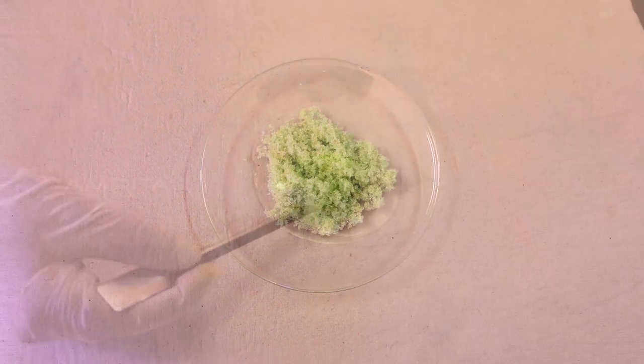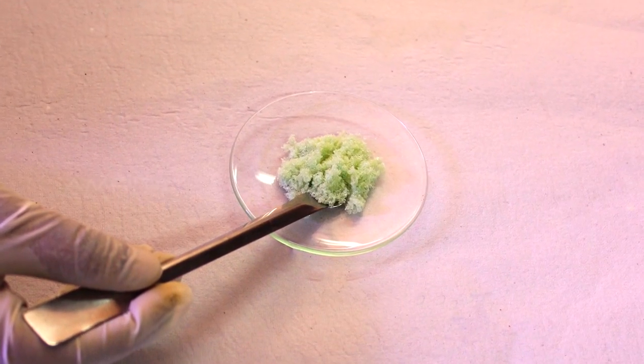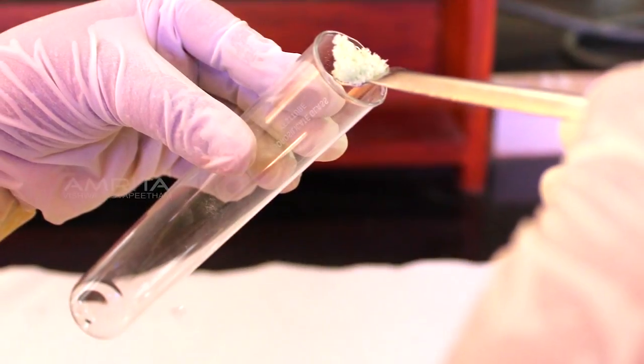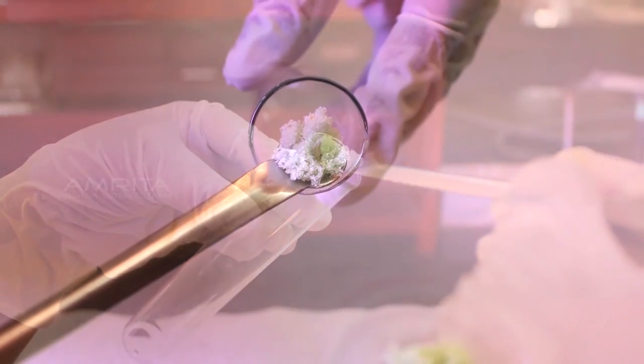Procedure: Take a small quantity of hydrated ferrous sulphate crystals and transfer it into a dry boiling tube using a spatula.